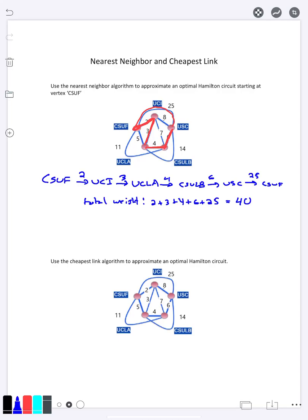Okay, the next one is called the cheapest link algorithm. And so what we do there is we don't have any starting point for this. We literally just look at the graph, and we take whatever is the shortest edge anywhere on it. So I'm going to pick the 2. Then I look at all the remaining edges, and I pick the shortest one left, which is 3.